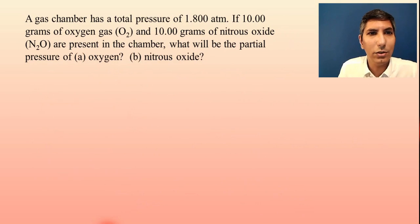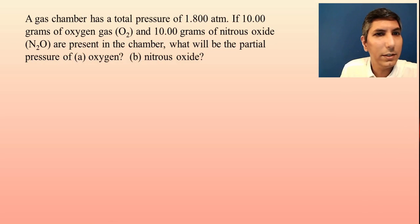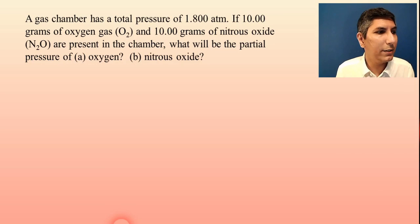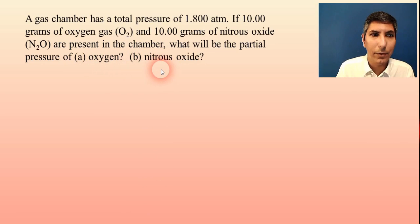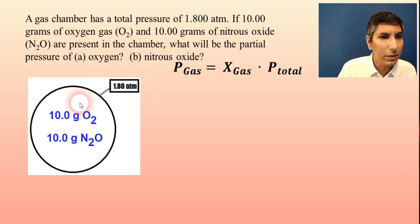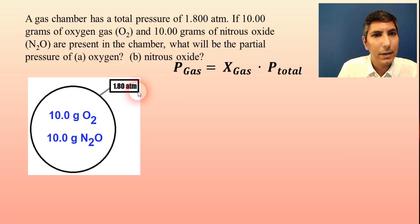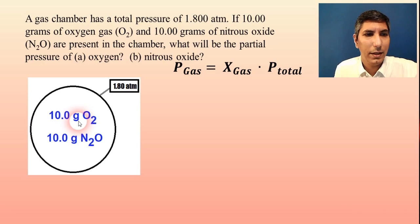In this case we have a gas chamber that has a total pressure of 1.800 atmospheres. If 10.00 grams of oxygen gas, O₂, and 10.00 grams of nitrous oxide, N₂O, are present in the chamber, what will be the partial pressure of A, oxygen, and B, nitrous oxide? I'm going to draw a little picture. Do you notice something different about this? It doesn't have moles — it gives us grams.